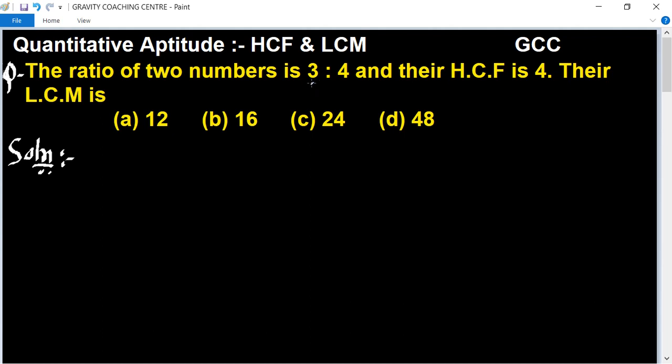In this question, two numbers have a given ratio of 3 is to 4 and their HCF is also given. We need to find their LCM. So suppose, let the two numbers be 3x and 4x.